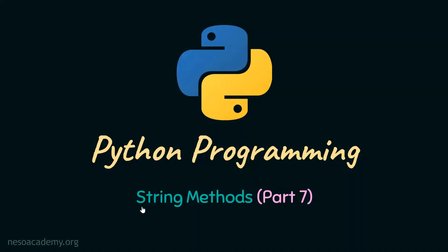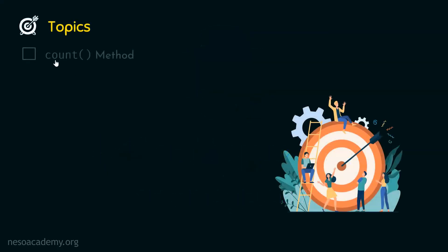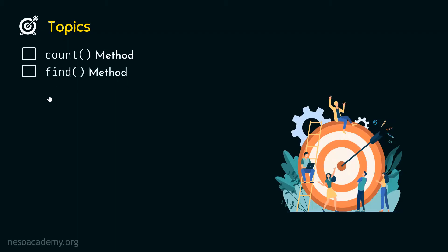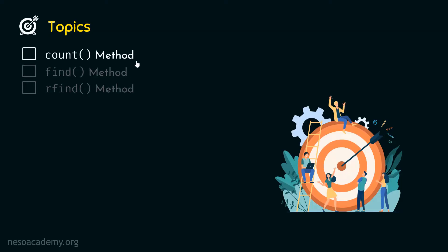Let's continue our discussion on string methods. This is part 7 of string methods. The first topic is the count method, the second topic is the find method, and the third topic is the rfind method. We will discuss all these topics in detail. Let's start from the first topic, which is called the count method.